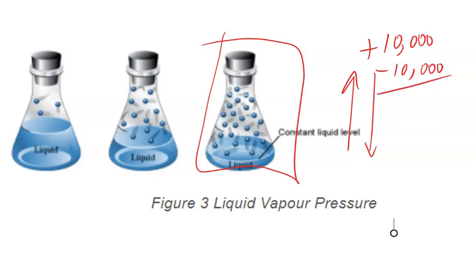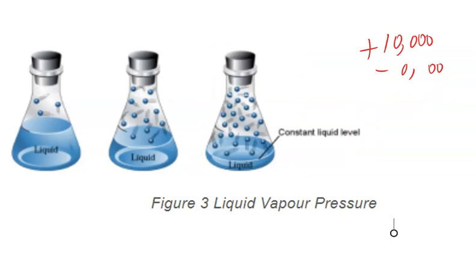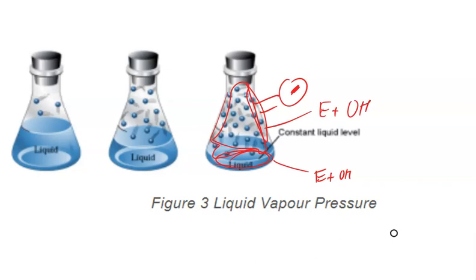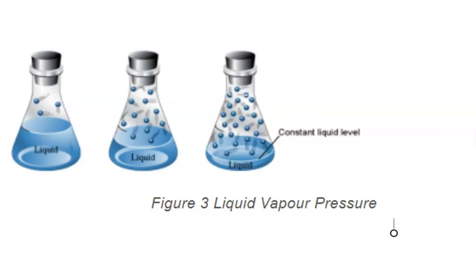So if you create 10,000 gas particles in the same period of time that you use up 10,000 gas particles going to a liquid state, there's no overall change. We call this dynamic equilibrium — 10,000 liquid particles move to the gas phase, but at the same time 10,000 other gas particles move to the liquid phase. The amount of gas above the liquid is constant. If we measure the pressure of that gas — and if this is ethanol, the gas is ethanol — the pressure of that gas above its liquid at equilibrium is defined as vapor pressure, and it is a physical property of the liquid.